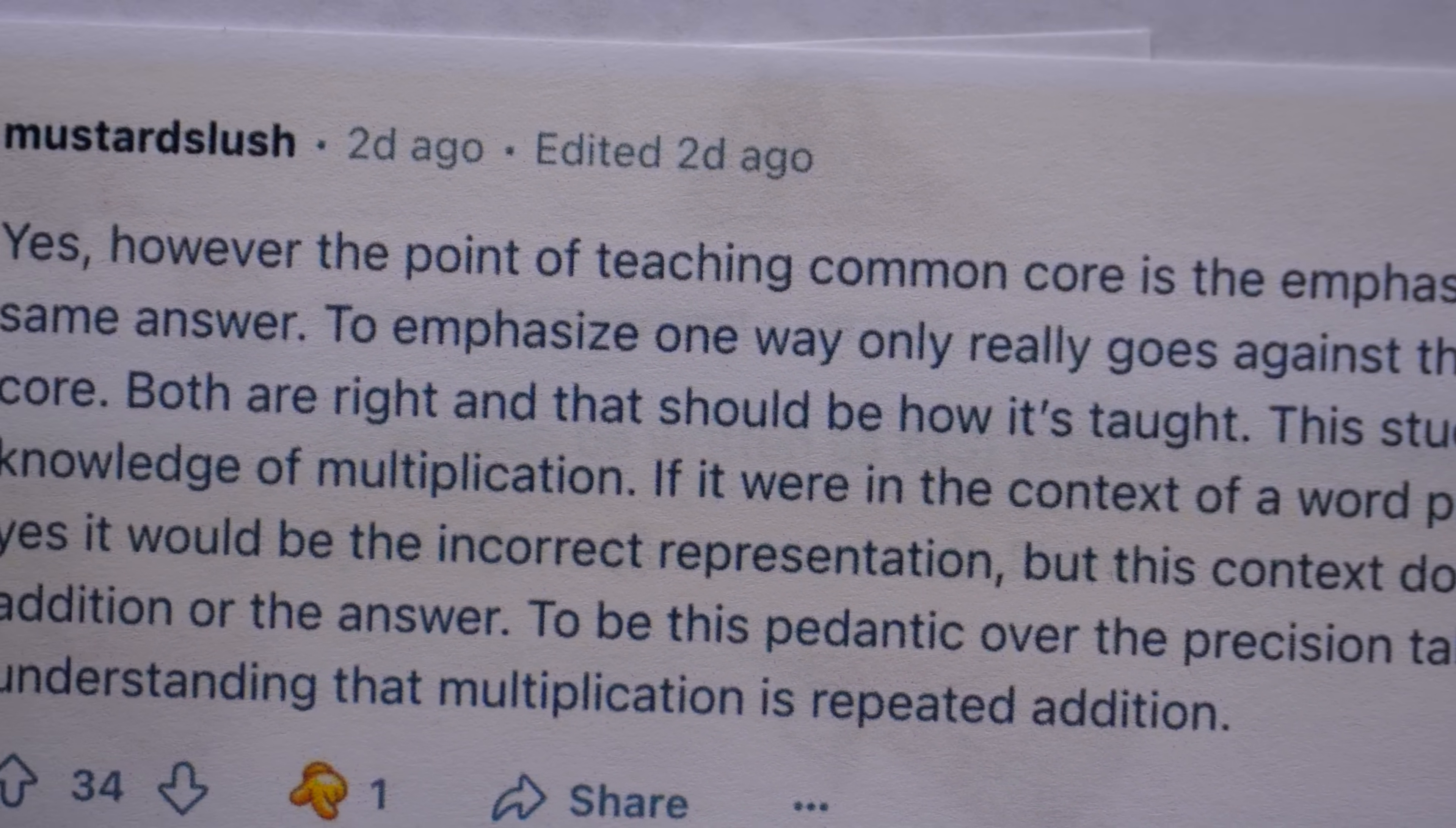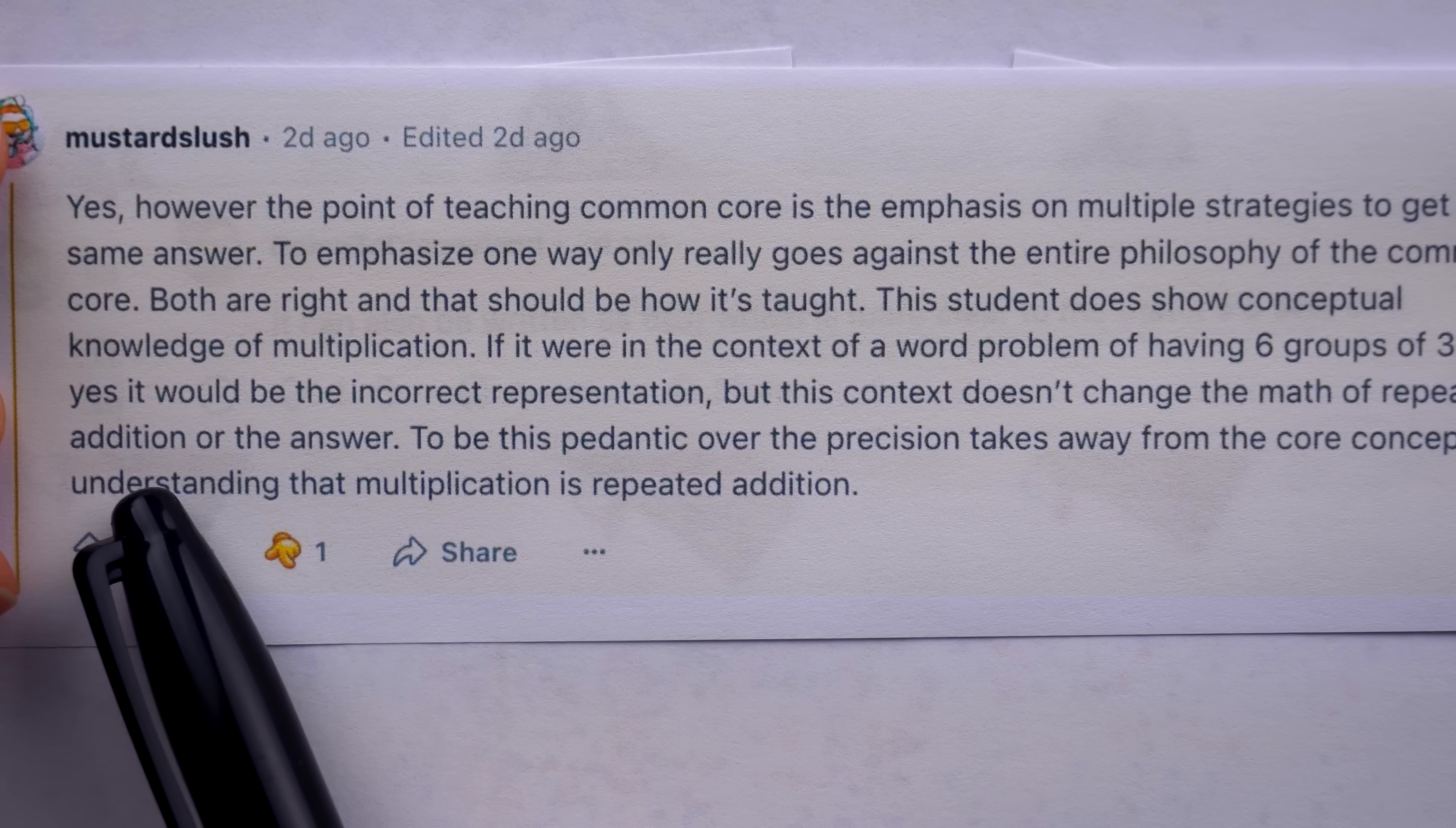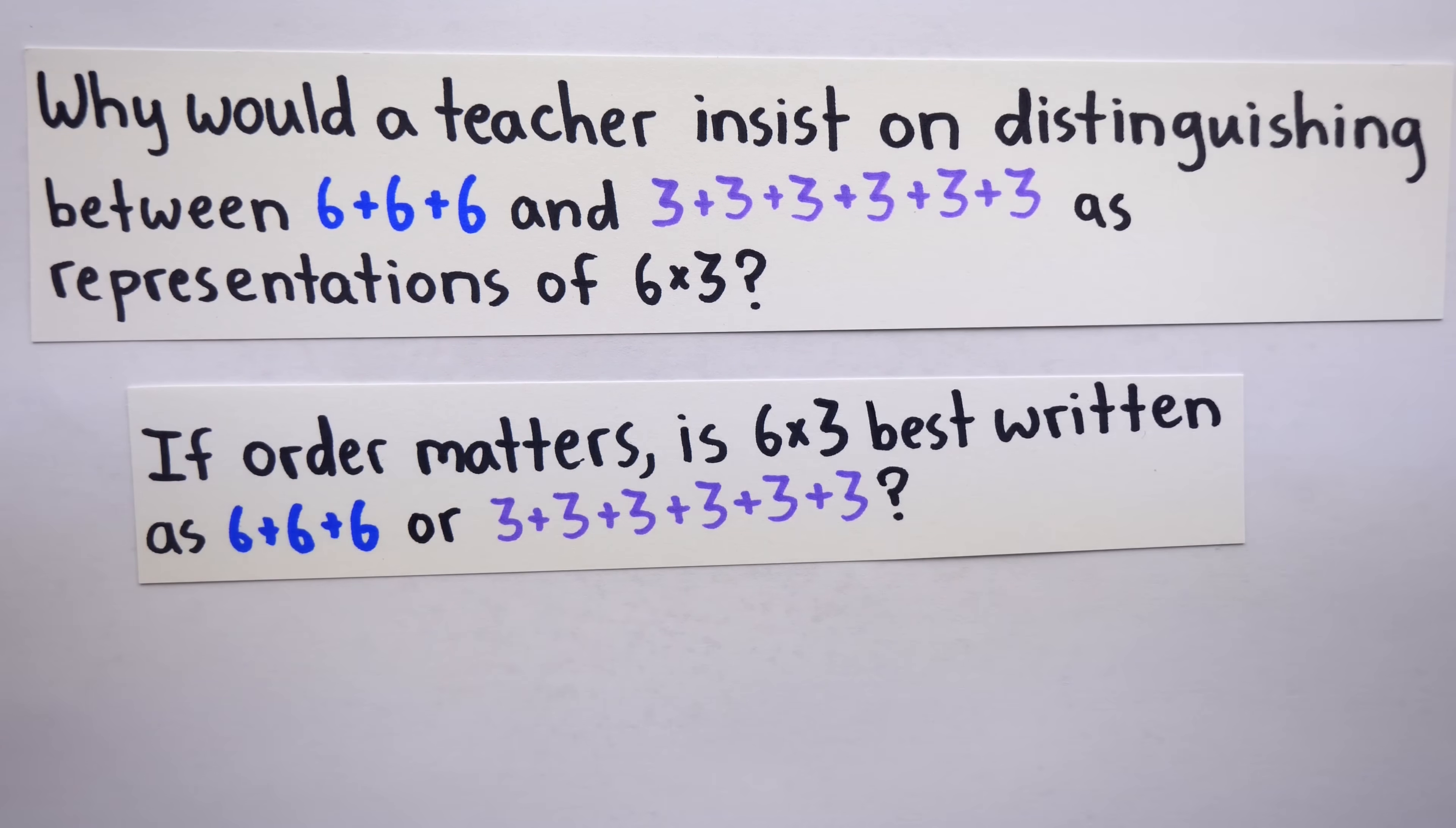Mustard Slush echoed a sentiment similar to that of Enlightened Bum, saying both are right and that should be how it's taught. This student does show conceptual knowledge of multiplication. To be this pedantic over the precision takes away from the core concept of understanding that multiplication is repeated addition. Okay, there's a lot of hot takes being cooked up here, but let's return to the key question, which is in regards to why a teacher would be so strict about the order of multiplication.